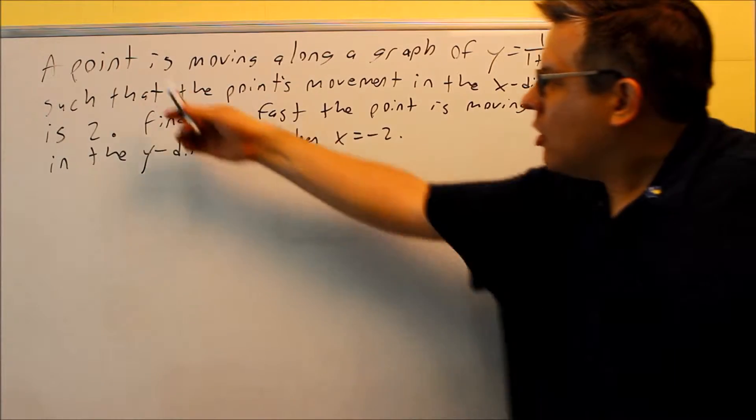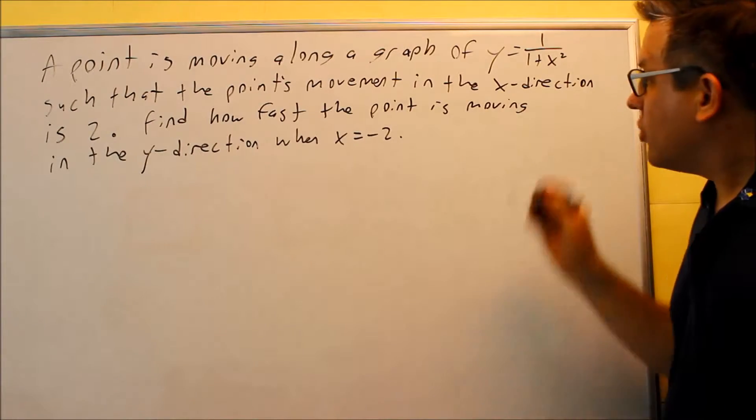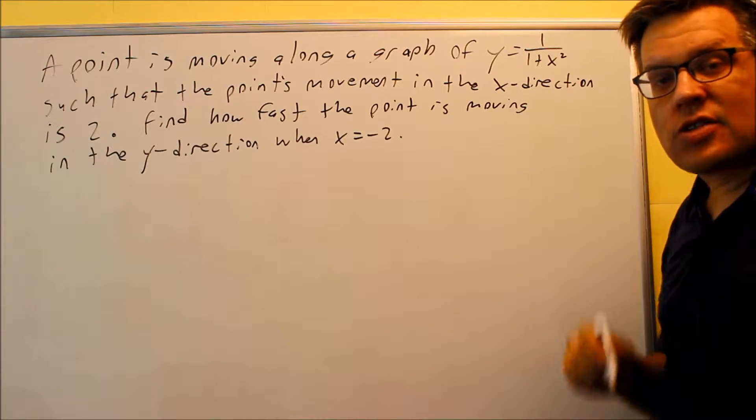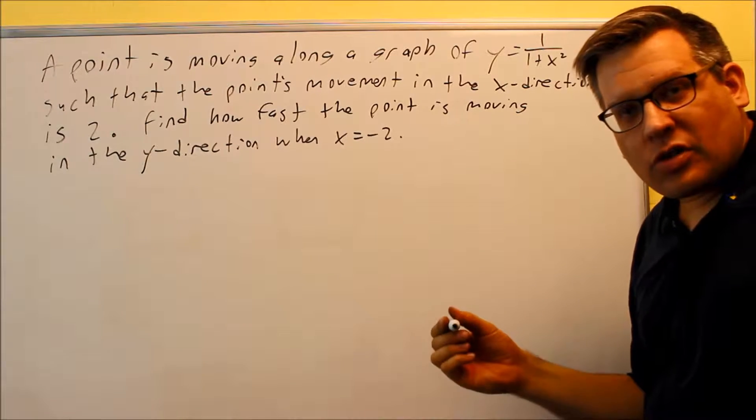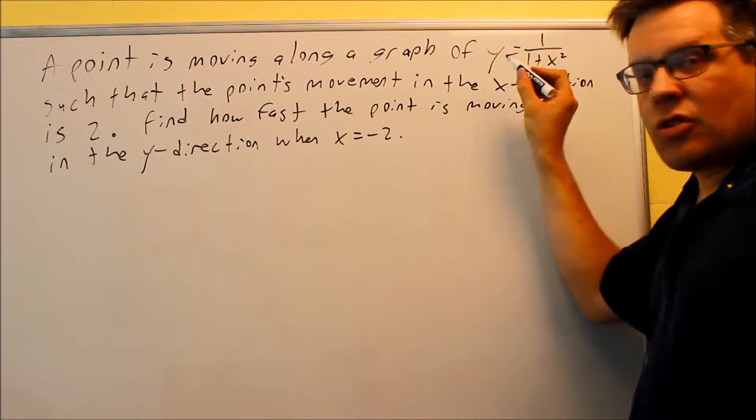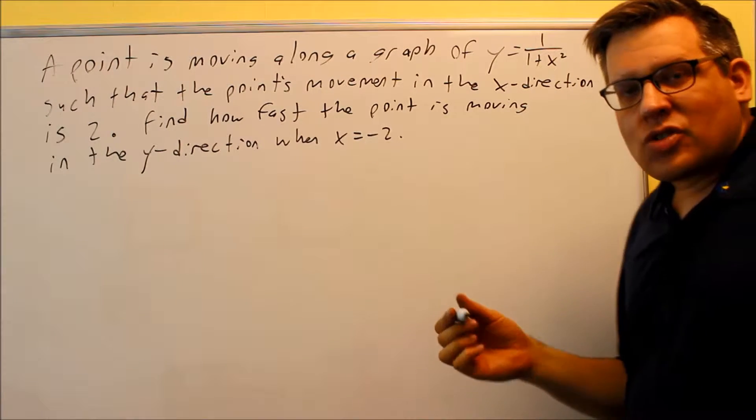Let's do that with this problem. A point is moving along the graph of—alright, so they give us an equation. We're going to use that later; that's the one we're going to be taking the derivative of with respect to time. Now, in this section it may not be so nice—they may not just give you one like that; you may have to come up with that on your own.